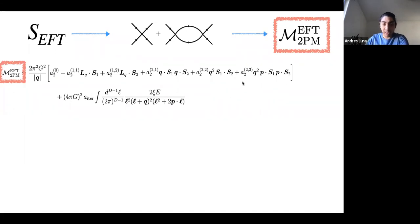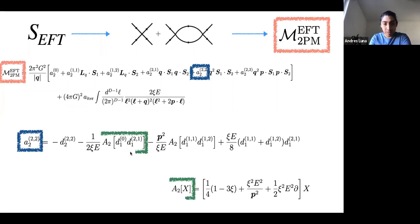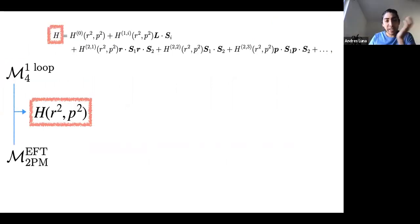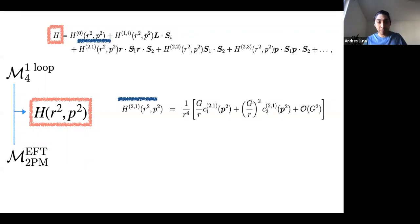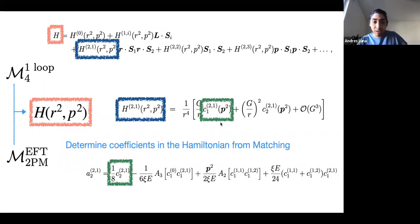We write our EFT amplitudes splitting them into coefficients of the operators with the right classical counting. We obtain coefficients that appear in the potential and functions that come from the integral reduction. Then by doing the matching we translate to a Hamiltonian, which is again given as coefficients of the same form, multiplying the right spin operators.